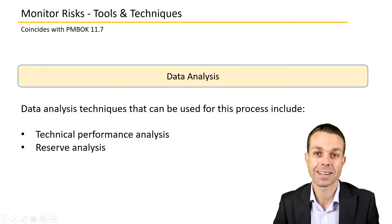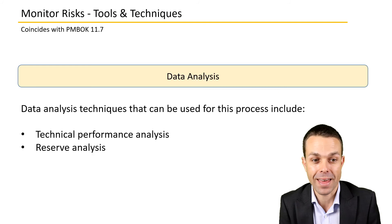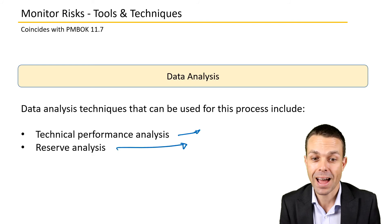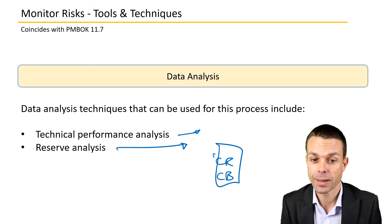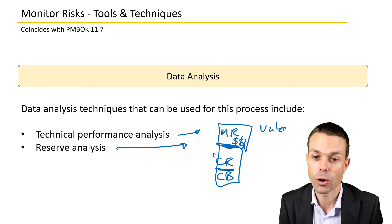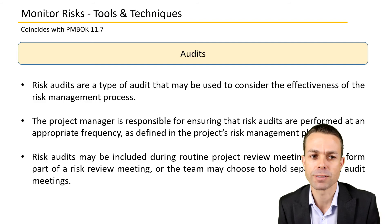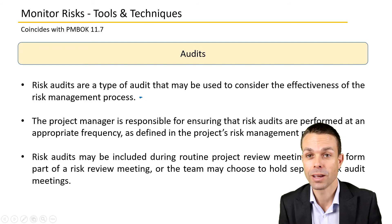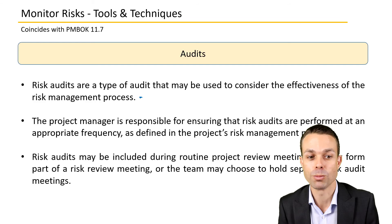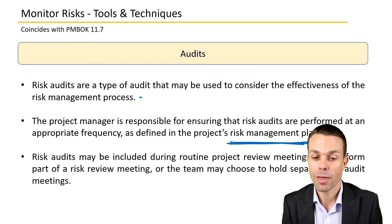Tools and techniques for monitoring risks include data analysis — specifically technical performance analysis and reserve analysis. Do we have enough contingency reserves within our cost baseline, and do we need any extra management reserves? Management reserves are the amount added on top of our cost baseline in the event of any unknown unknowns — risks that we haven't planned for. Audits may come about as well. Risk audits are a type of audit used to consider the effectiveness of the risk management process. The project manager is responsible for ensuring that risk audits are performed at an appropriate frequency, as defined in the risk management plan. Who needs to audit our processes and are they effective?